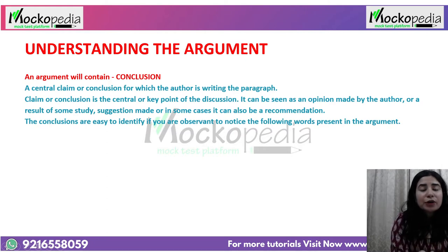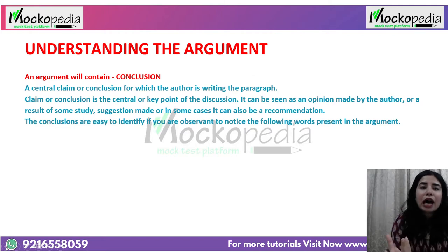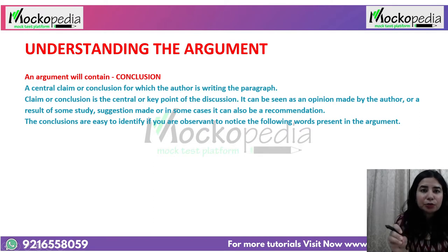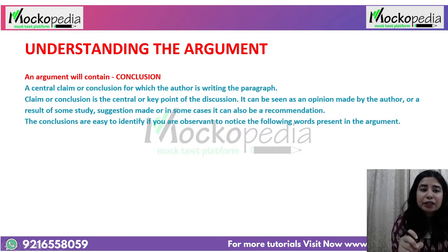An argument essentially comprises of a claim or a conclusion. Both these terms can be used interchangeably. Conclusion is the objective of writing the argument — the point the author wants to establish. In technical terms this is called a claim. There can be certain conclusion indicators present in the argument that will help you easily identify the conclusion.